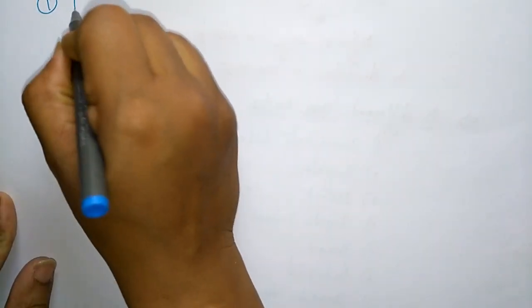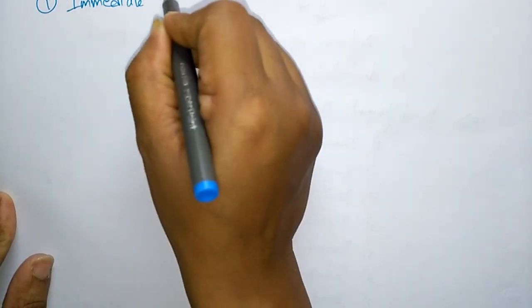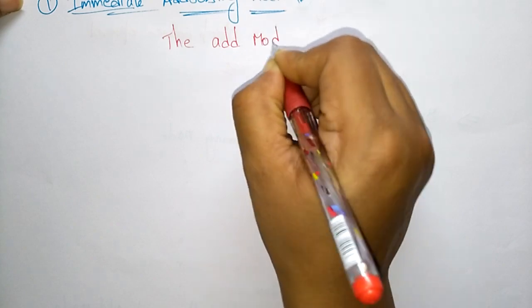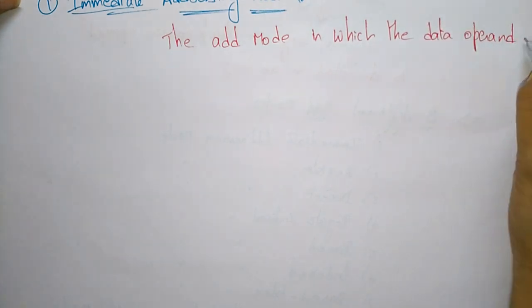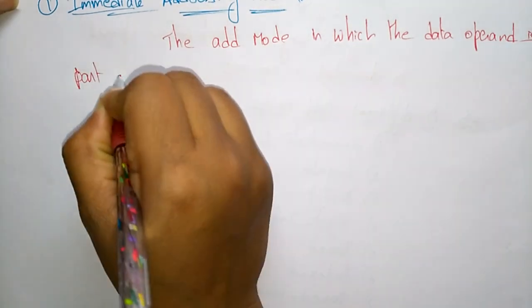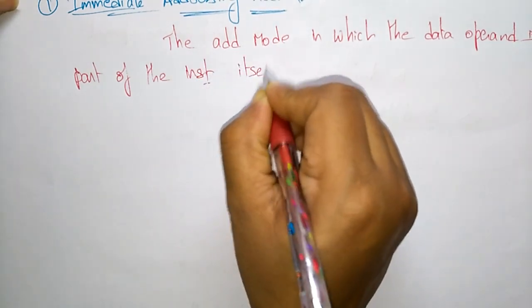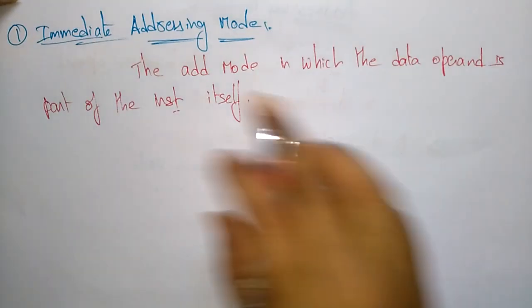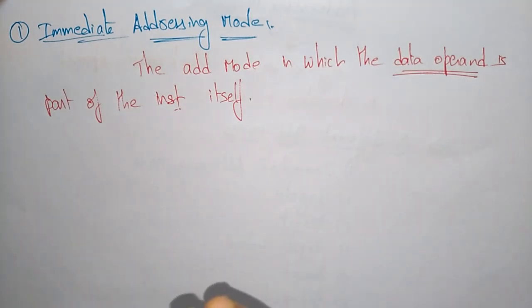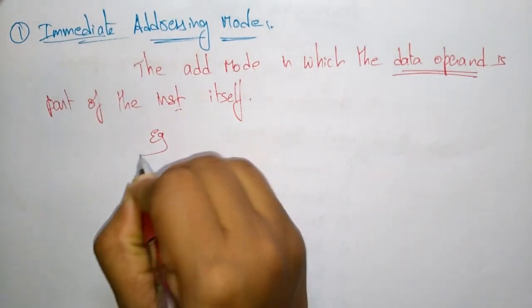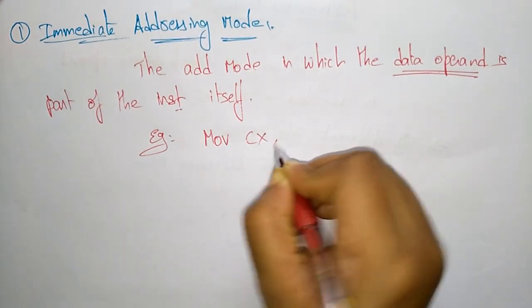Now let us see each one. The first is immediate addressing mode. In immediate addressing mode, the data operand itself is part of the instruction. Whatever data is there, it is a part of the instruction itself — that is called immediate addressing mode. For example: MOV CX, 4929H.